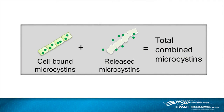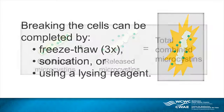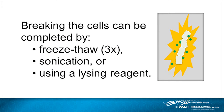To measure cell-bound and released microcystins combined, it is important to break the cells before analysis. Breaking the cells can be completed by freezing and thawing, sonicating the samples, or using a lysing reagent.